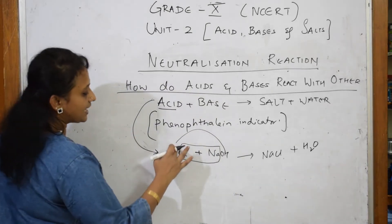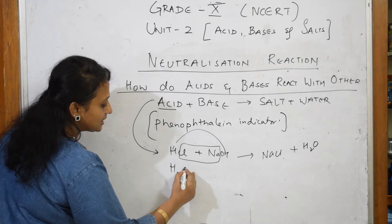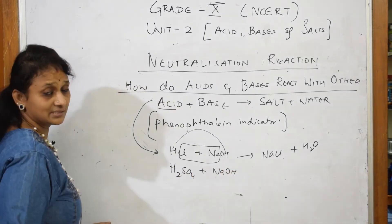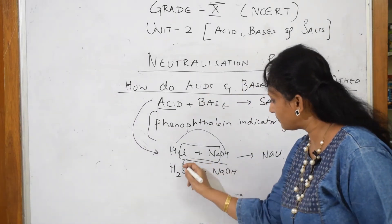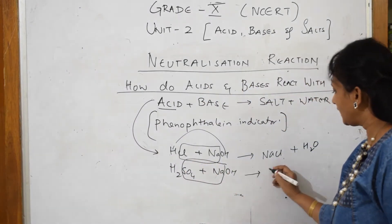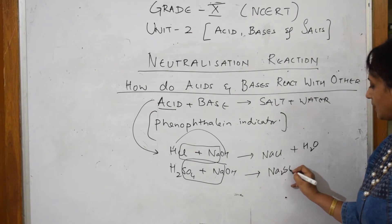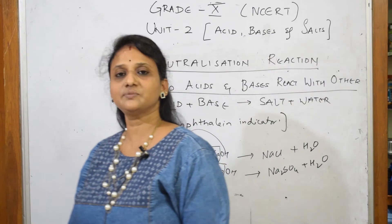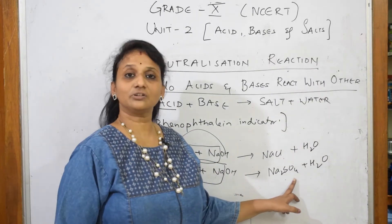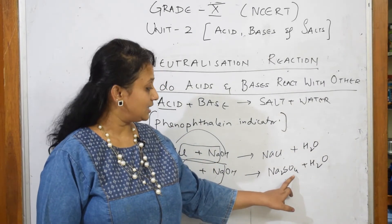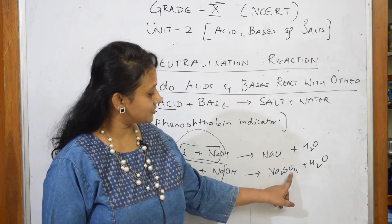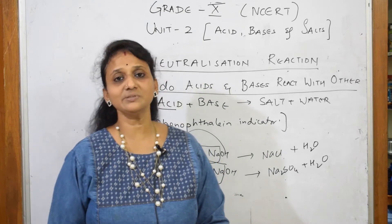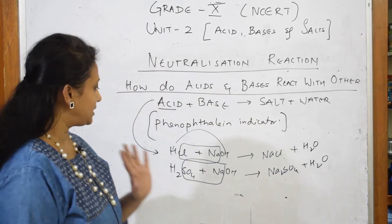Let's take one more example. Suppose instead of HCl, I have sulfuric acid with sodium hydroxide as a base. Same product again — you will get the center part, that is Na₂SO₄, and the leftover water. How do I know Na₂SO₄ is the formula? The valency of sulfate is 2 and the valency of sodium is 1, so it is sodium sulfate: Na₂SO₄.